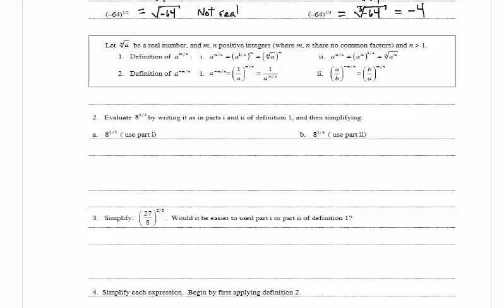Definition of a raised to the negative m over n, part 1: a raised to negative m over n is equal to 1 over a all raised to m over n. Part 2: a over b all raised to negative m over n is equal to b over a all raised to m over n.